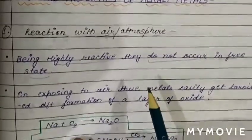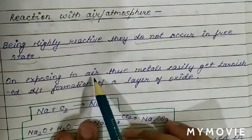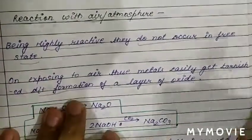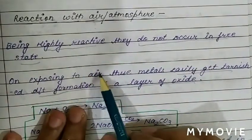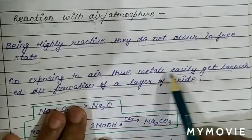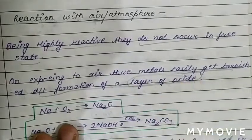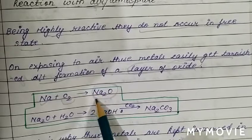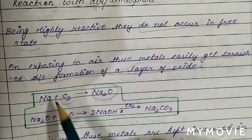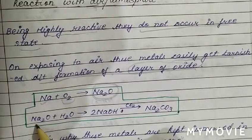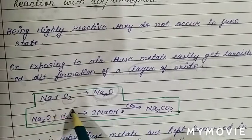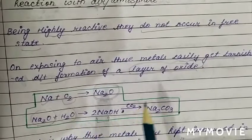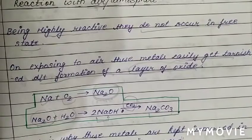On exposure to air, these metals easily get tarnished due to the formation of a layer of oxide. For example, when sodium comes in contact with air, it forms sodium oxide. When this basic oxide dissolves in water, it forms NaOH — a base. This NaOH when combined with CO₂ forms Na₂CO₃.